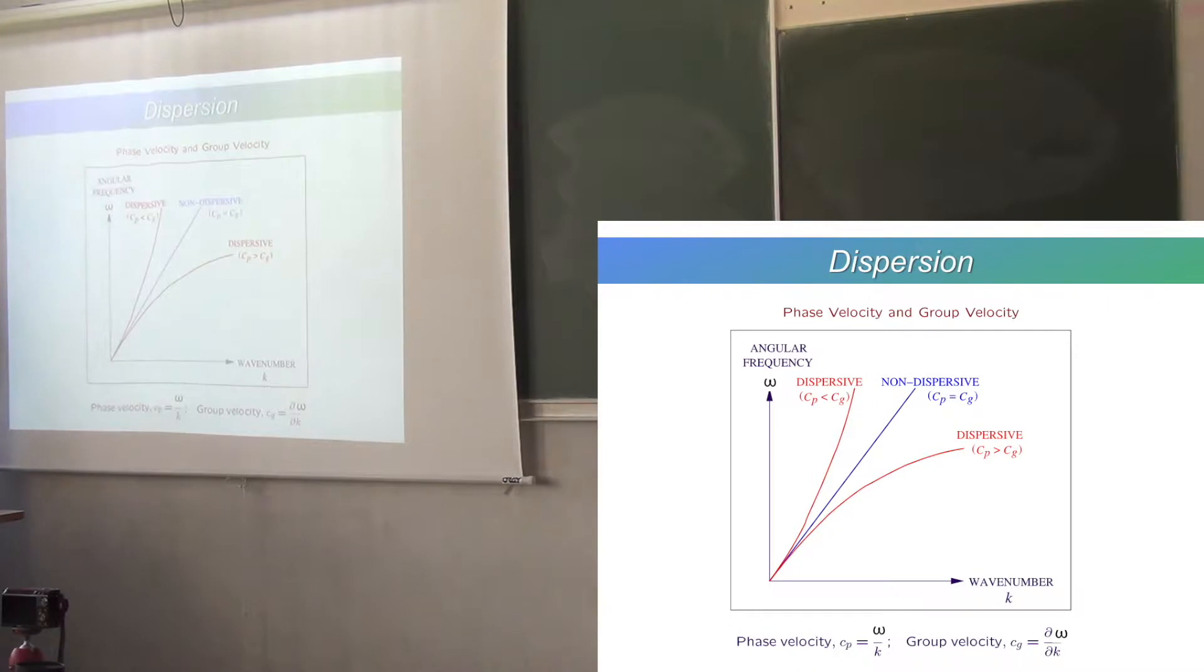So here's a diagram which is called a dispersion diagram. If we know what our physical system is, we can imagine that we can work out the relationship between omega and k, between the frequency and the wave number. And so, we have a few different cases here. We have non-dispersive, so that's just a straight line. It's linear. So, then you can see that if k is very small...